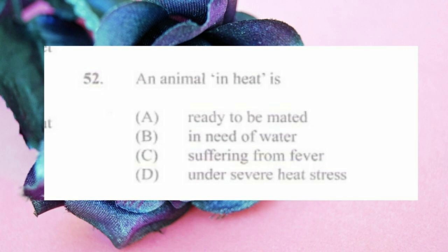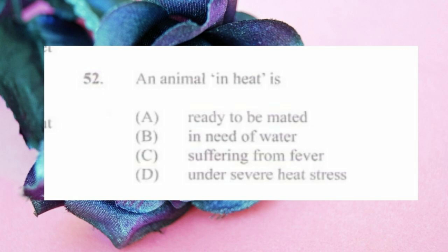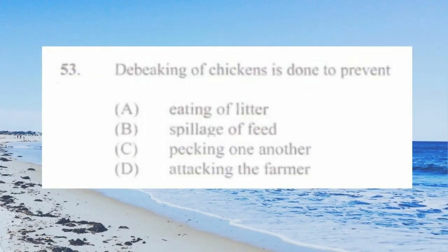Question number fifty-two: an animal in heat is a) ready to be mated, b) in need of water, c) suffering from fever, d) under severe heat stress. The answer is a) ready to be mated. When an animal is in heat it means it is ovulating; the female releases eggs and needs sperm to fertilize them, so she is open for mating.